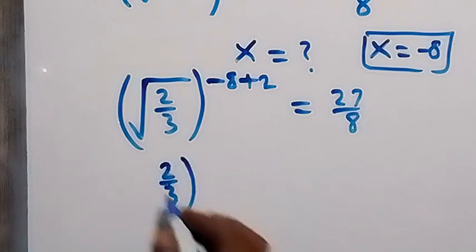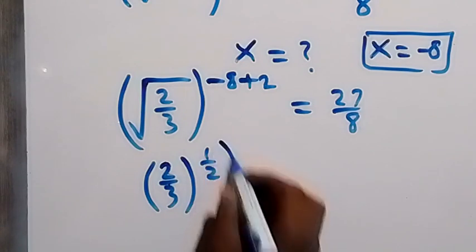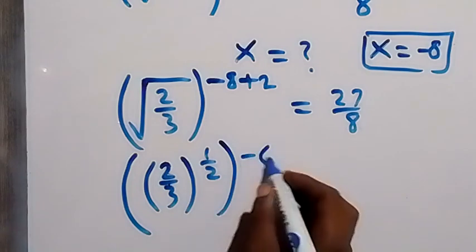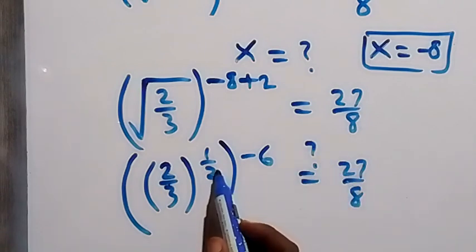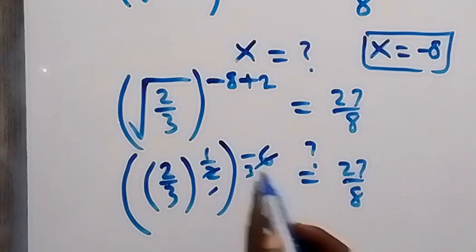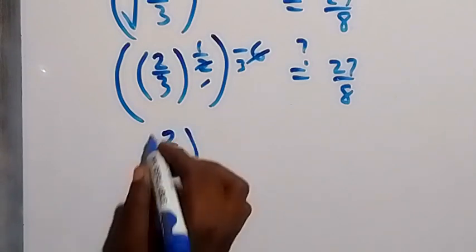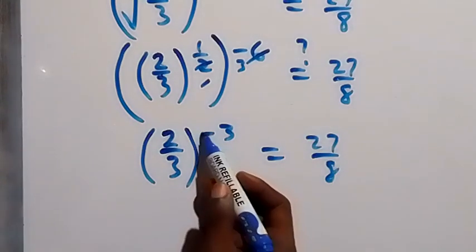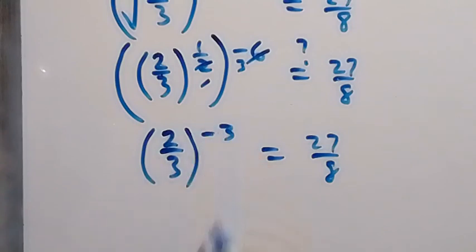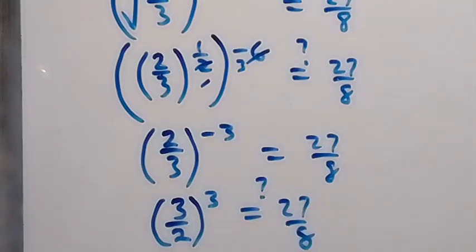That's 2 over 3 raised to power half, then to power minus 6 — using the law of indices we multiply to get 2 over 3 raised to power minus 3. Is this equal to 27 over 8? Since we have a negative power, we take the reciprocal of the bracket, giving us 3 over 2 raised to power 3. Is this equals to 27 over 8?